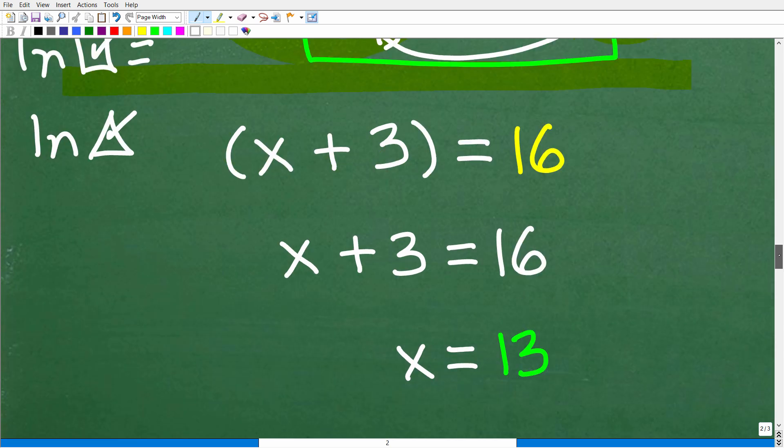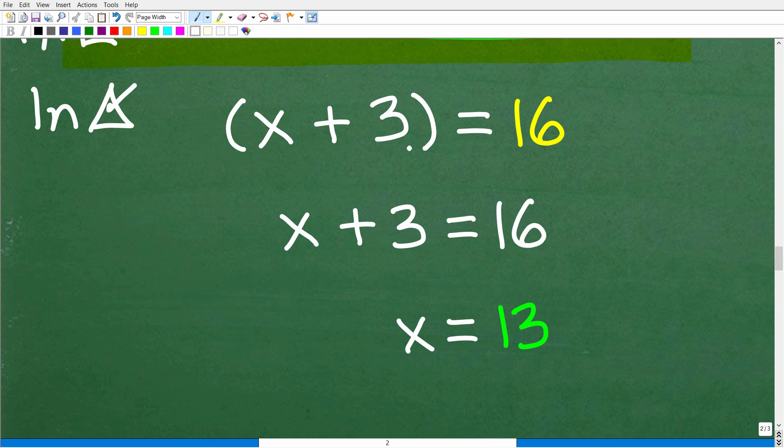All right, so this is going to be very easy. We have x + 3 = 16. All we have to do is subtract 3 from both sides of the equation. Of course, x = 13.